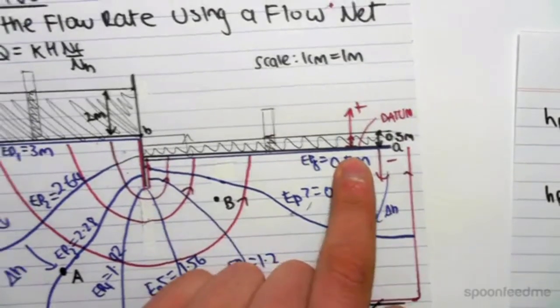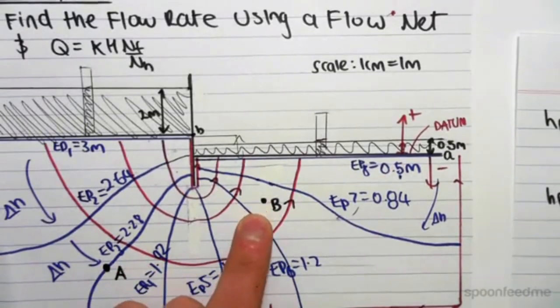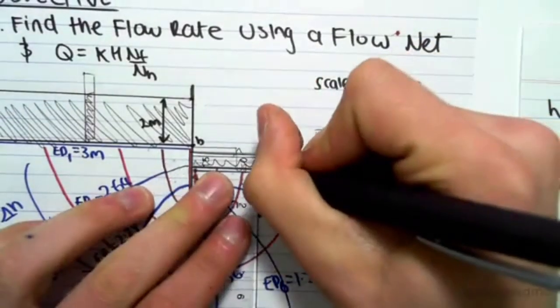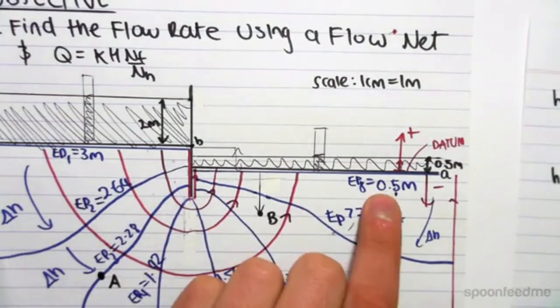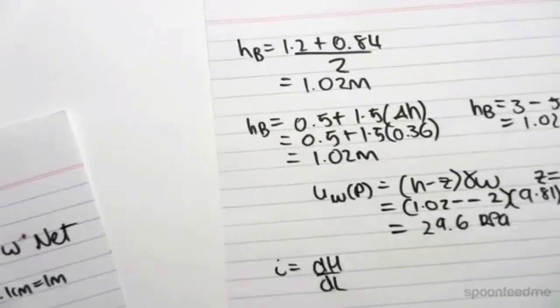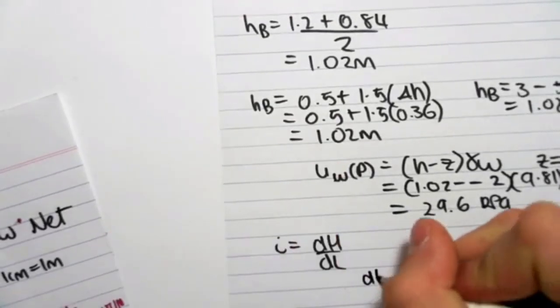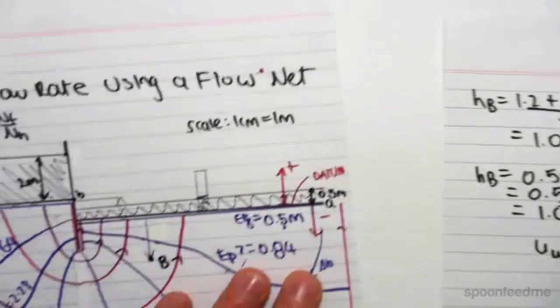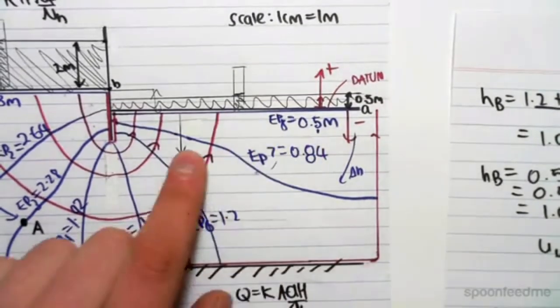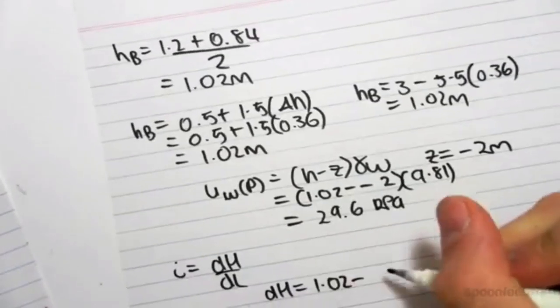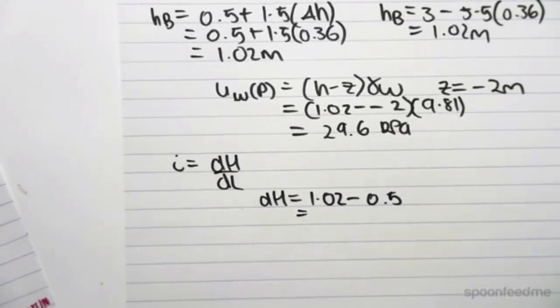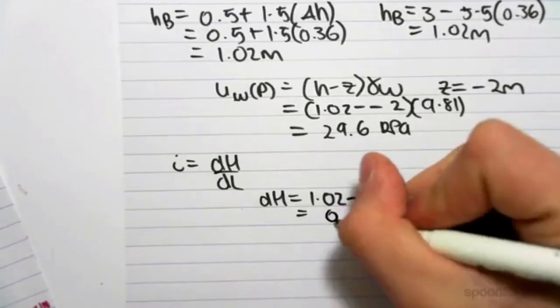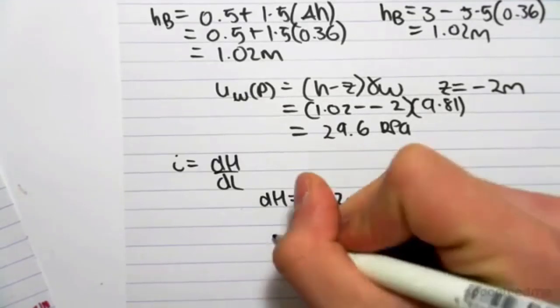This is defined from our datum. From our datum, if we come down to this point, the change in head would be 0.5. So we first find the head of B. We know the head of B is 1.02 meters. So dH equals 1.02 minus the head of the datum, which is 0.5 meters. So the change in head is 1.02 minus 0.5, which is 0.52 meters.